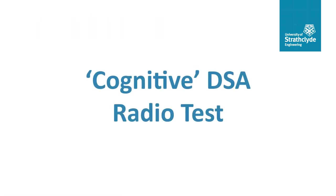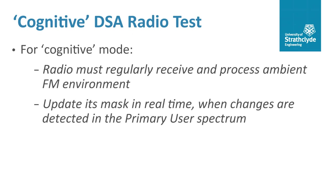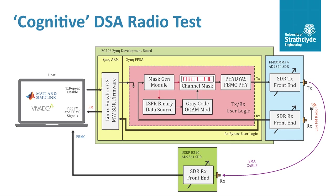The ultimate aim of this work was to develop a cognitive DSA radio that was able to automatically reconfigure its channel mask and transmit in empty channels of the FM radio band whilst ensuring the protection of primary users. To achieve this goal, the radio must regularly receive and process the ambient FM radio environment and update its mask as soon as changes are detected in the primary user spectrum. The targeted Zynq SDR design was modified so that live FM radio signals could be acquired from an antenna and fed into the module that reconfigures the channel mask. The radio is set to perform a new scan and generate a new mask once every second.